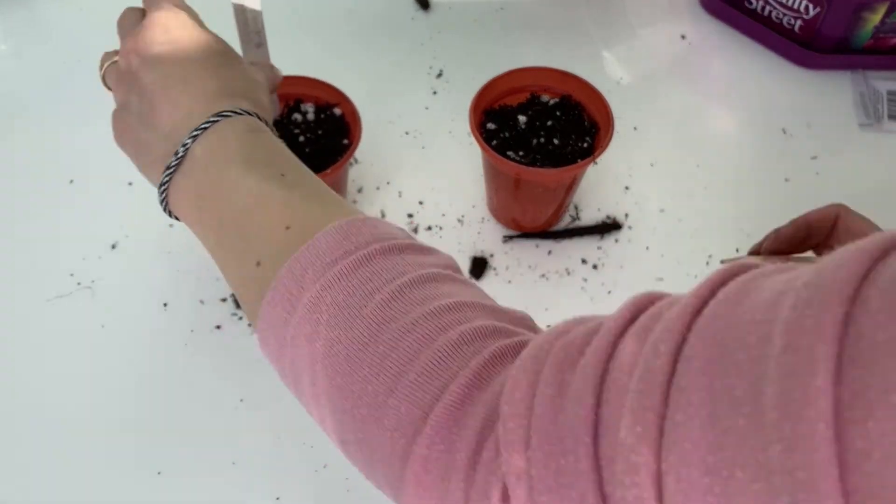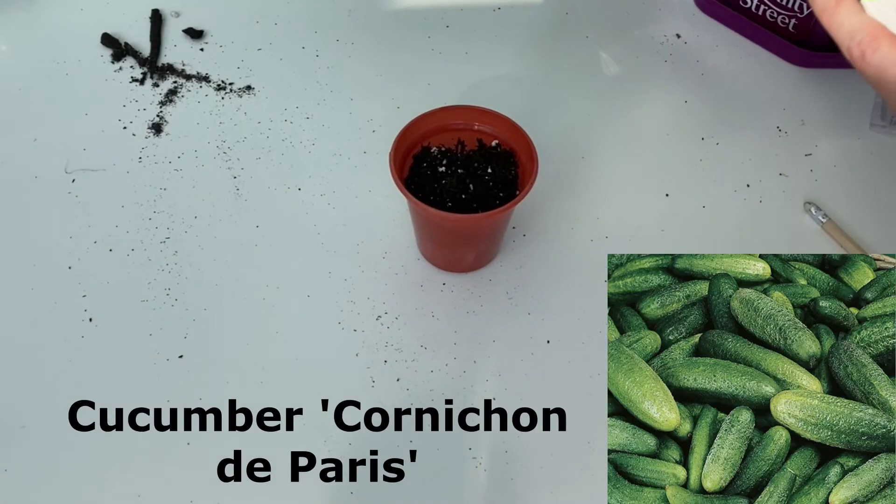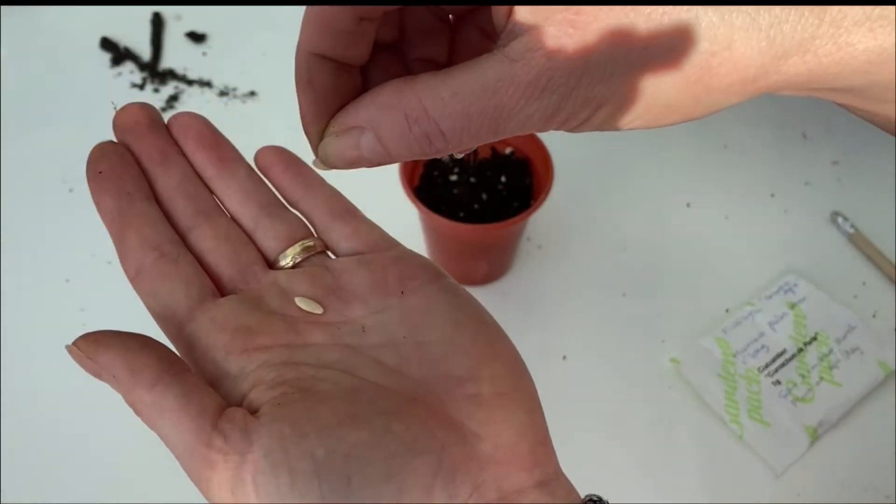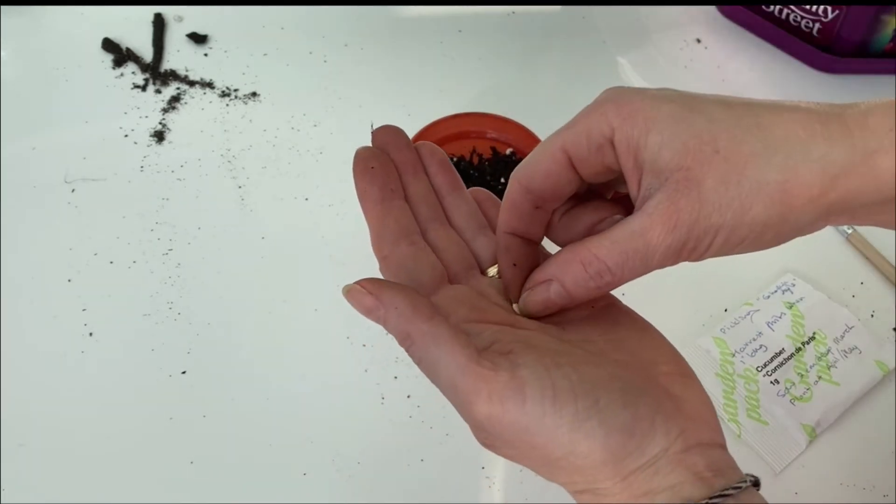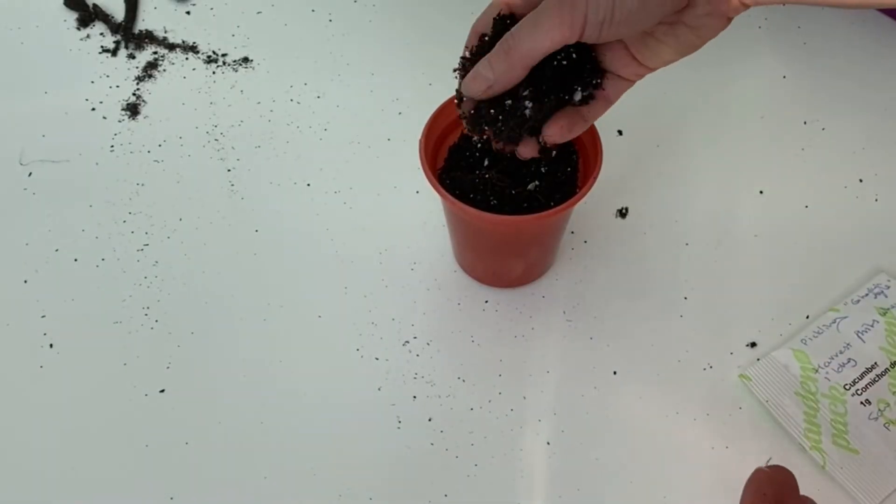The second cucumber I'll be sowing is this kind of small gherkin style cucumber. I haven't grown it before, so this is new to me, but the instructions will be the same for all of the other cucumbers. If you've grown this before, let me know how it turned out in the comment section below.